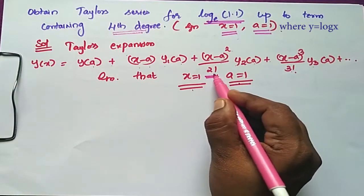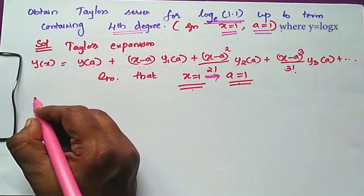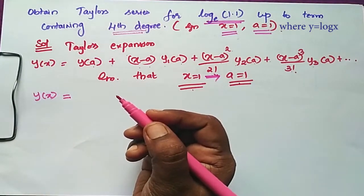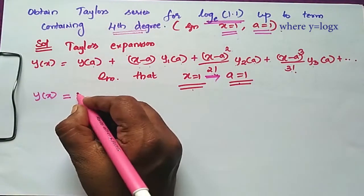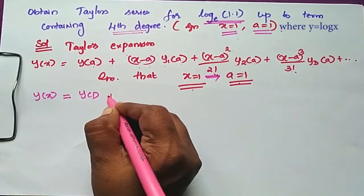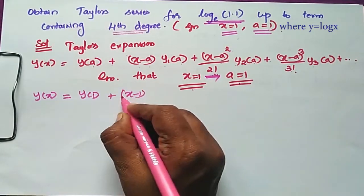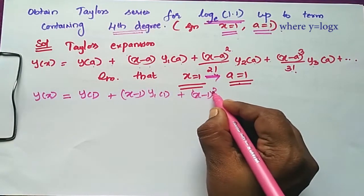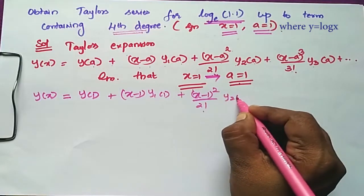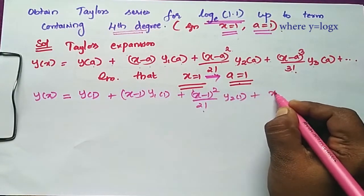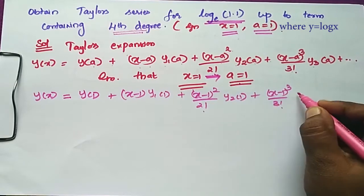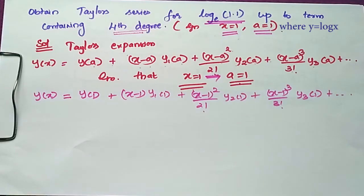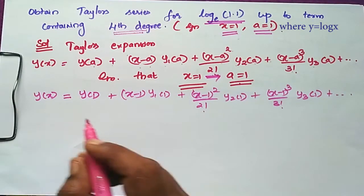Substituting a = 1, the expansion becomes: y(x) = y(1) + (x−1)·y₁(1) + (x−1)²/2! · y₂(1) + (x−1)³/3! · y₃(1) + etc.